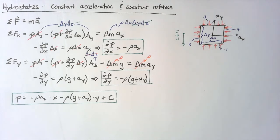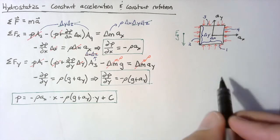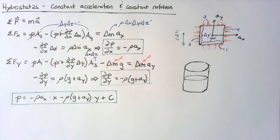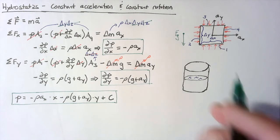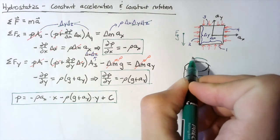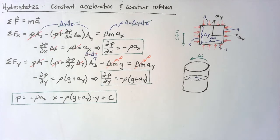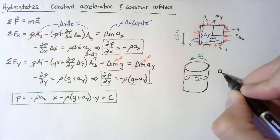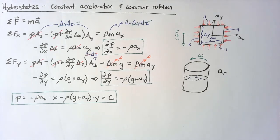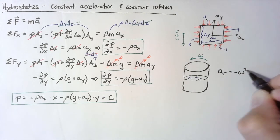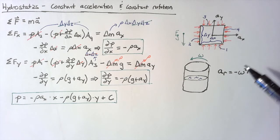Now let's switch gears and look at constant rotation. The situation here is that we have some drum or circular surface enclosing some water. This drum is going to rotate, and after some time, the friction of the wall is going to cause the water to start rotating with it. The end result is that the entire thing is going to be moving as a rigid body. In that situation, we know the acceleration is going to be solely in the r direction, with a value of negative omega squared r — the negative meaning the acceleration is actually pointing towards the center.